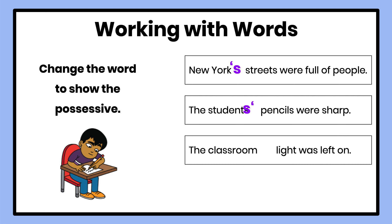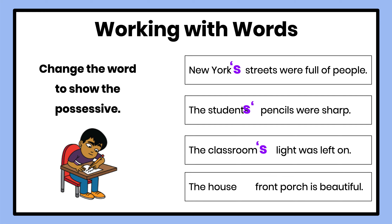Let's try one more: The classroom light was left on. If I want to make classroom into a possessive to show it owns the light, I'm going to add an apostrophe S because classroom ends in an M. The apostrophe S changes it to: the classroom's light was left on. Now that light belongs to the classroom. For our final one: The house's front porch is beautiful — adding apostrophe S turns house into our possessive. Great job working with possessives.